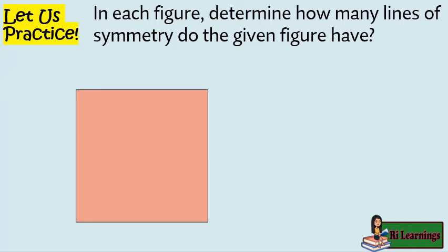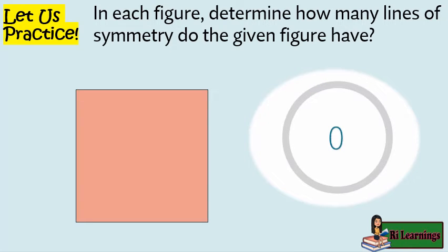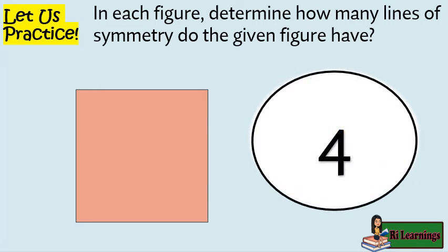How many lines of symmetry does the given figure have? I will give you 10 seconds to answer, and the timer starts now. And the answer is 4 — one vertical, one horizontal, and two diagonal lines of symmetry.